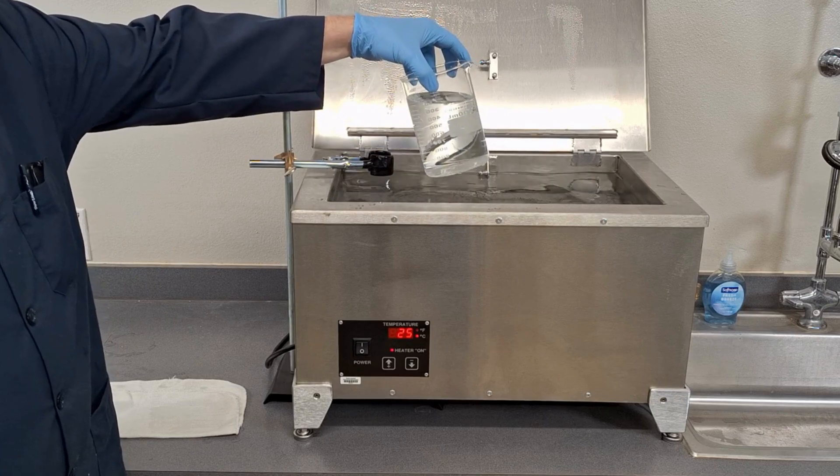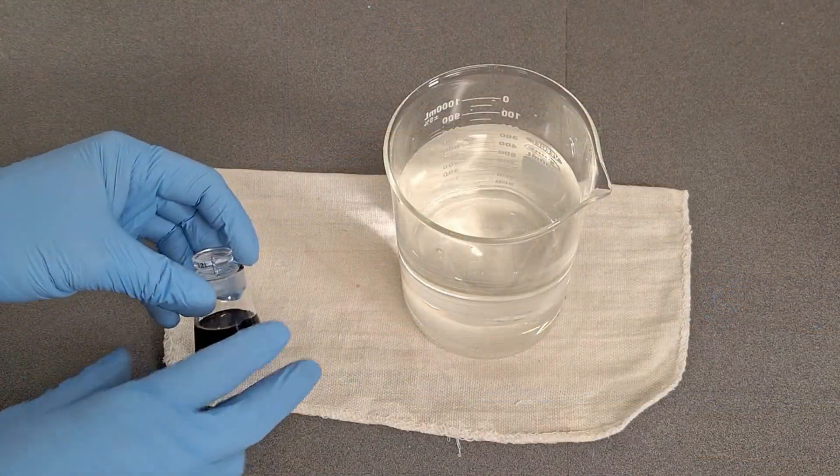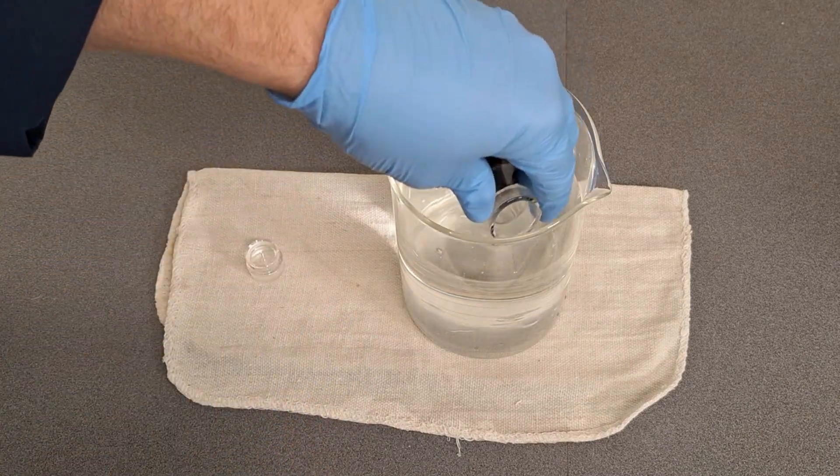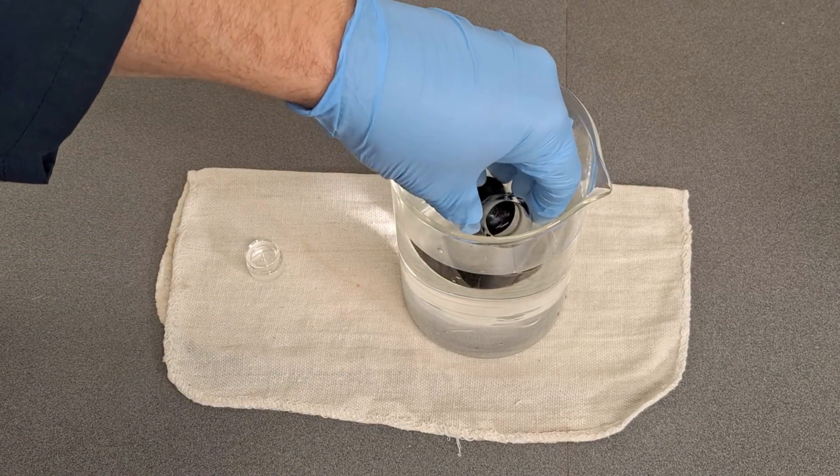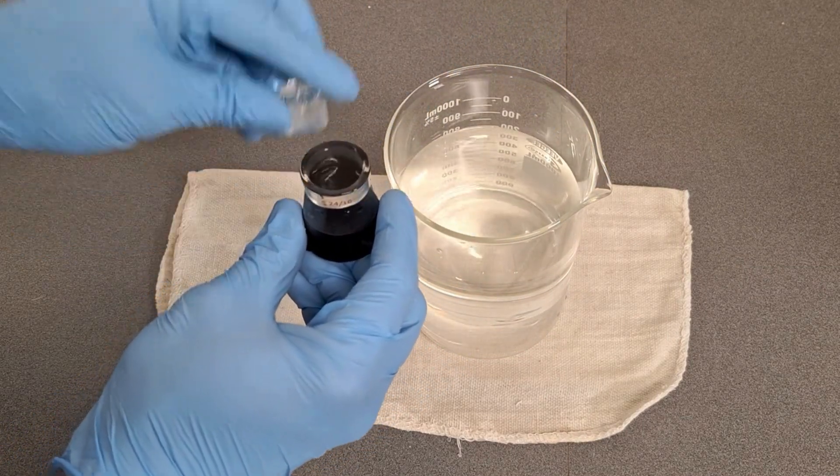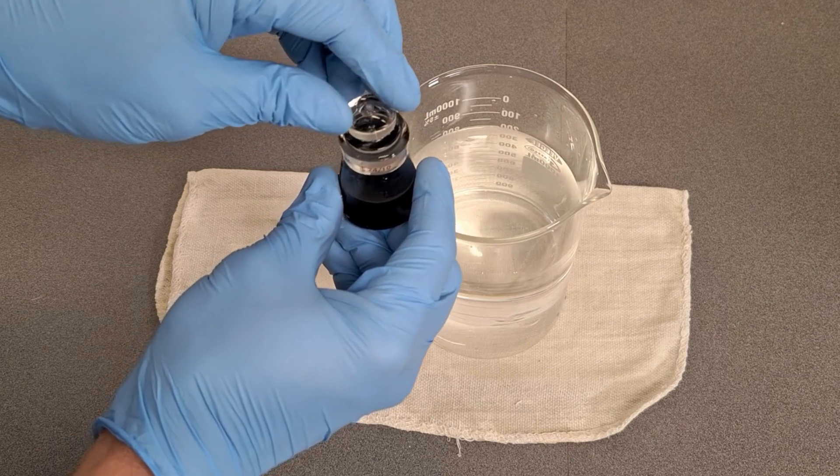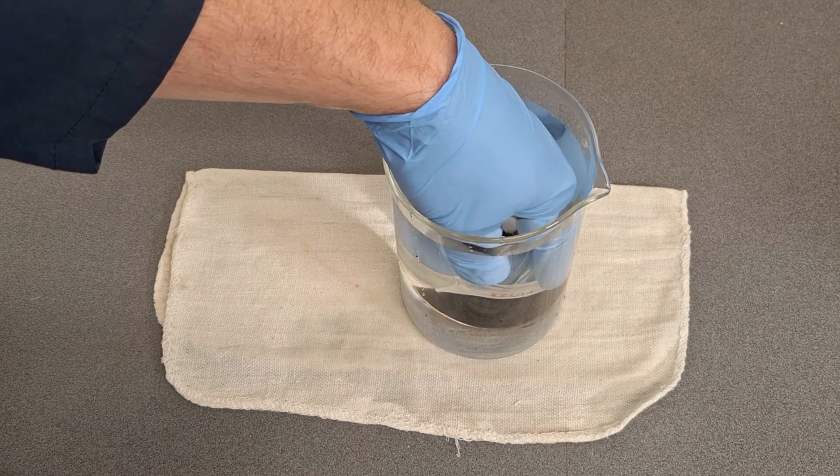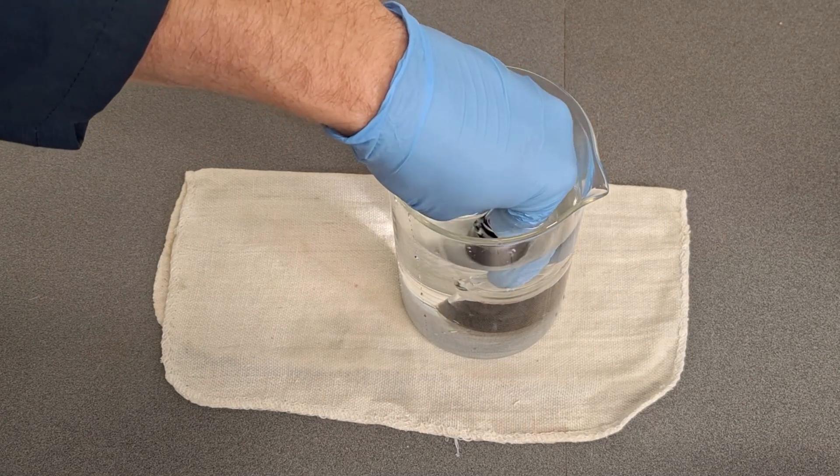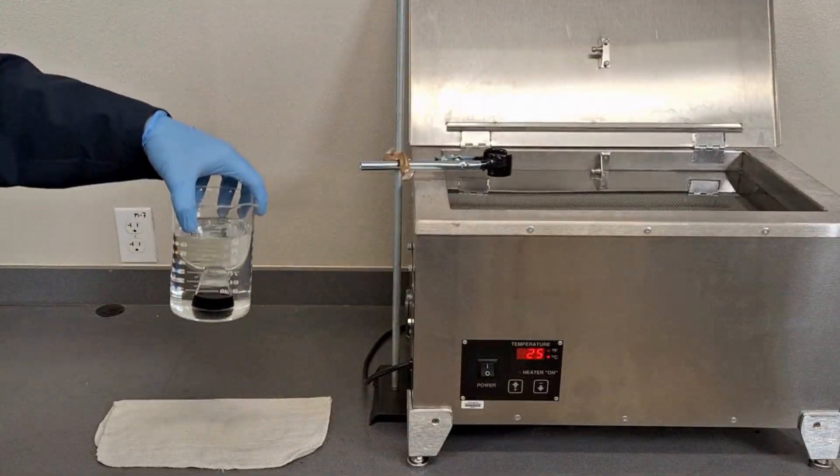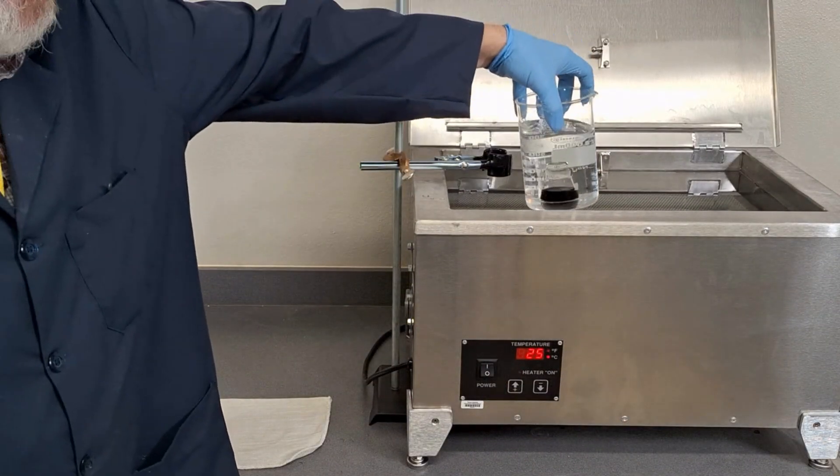Remove the beaker from the bath. Fill the pycnometer. Remove the pycnometer and loosely place the stopper into place. Place the pycnometer into the beaker and gently but firmly press the stopper into place. Avoid trapping air bubbles in the pycnometer. Return the beaker to the water bath for at least 30 minutes.